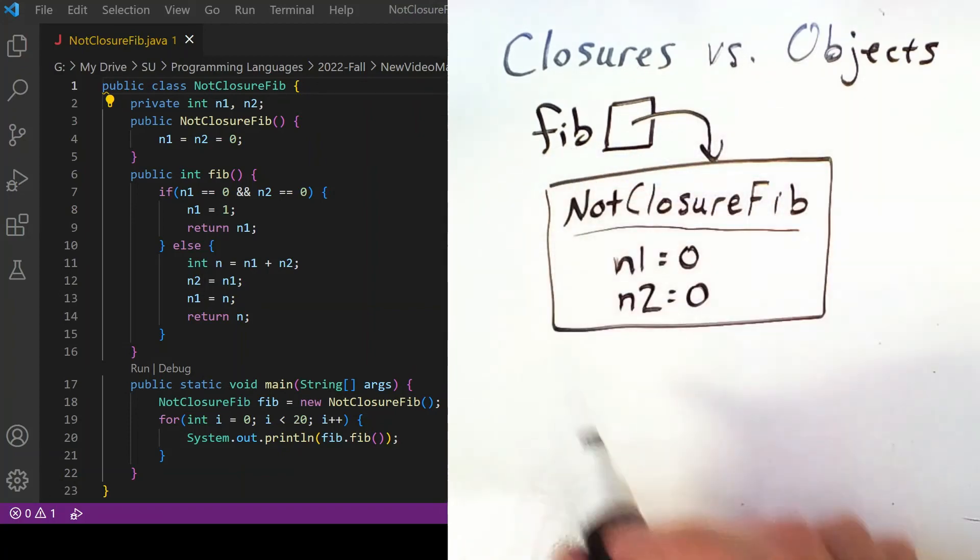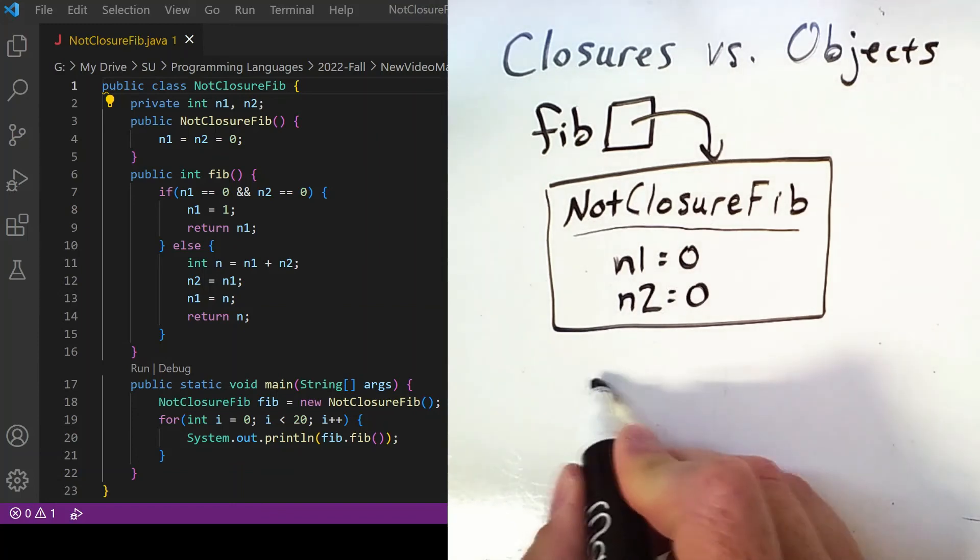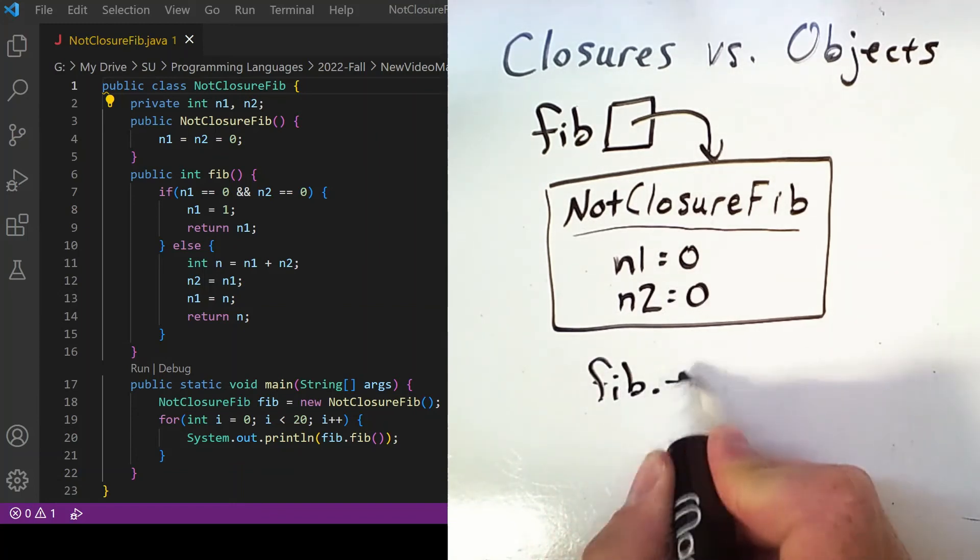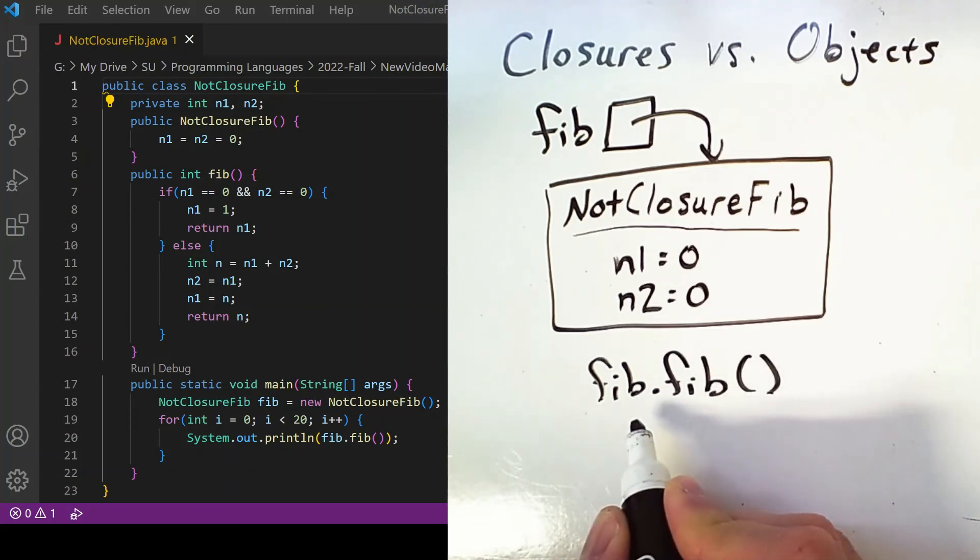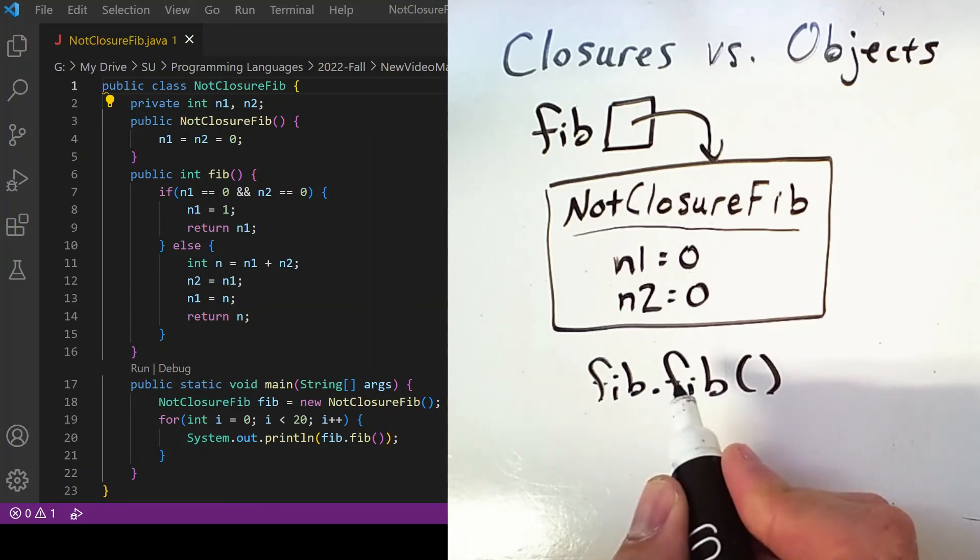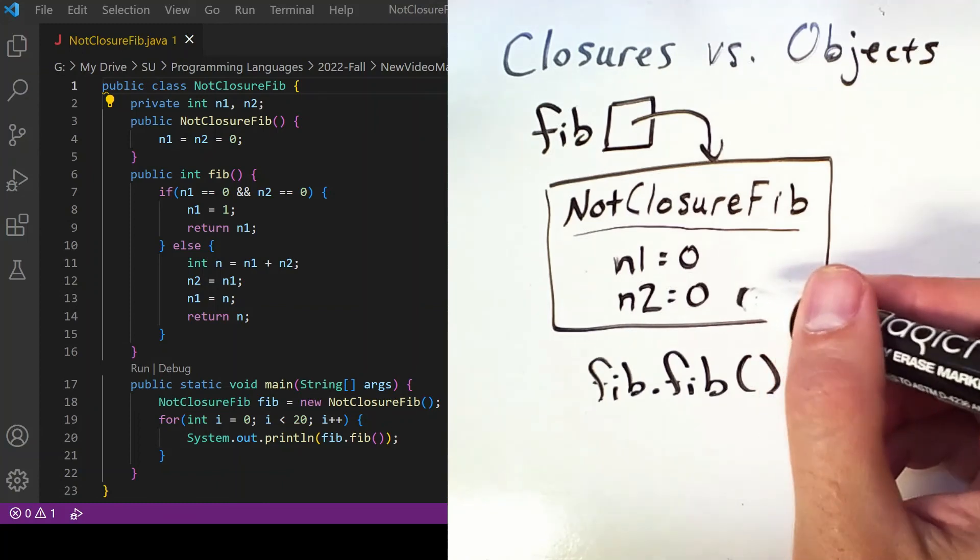So as I repeatedly call the fib method, which belongs to this variable which is also named fib, it will update the internal state of these private instance variables and then return a result.